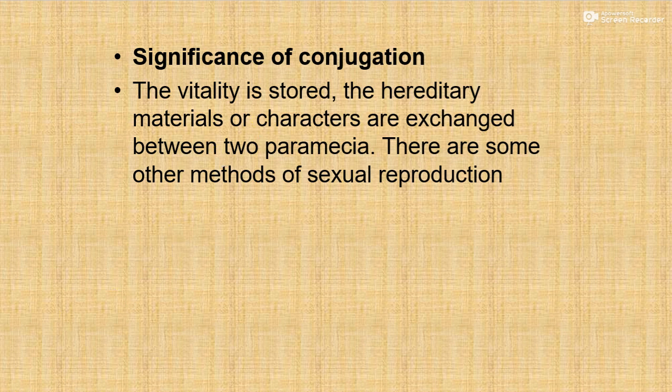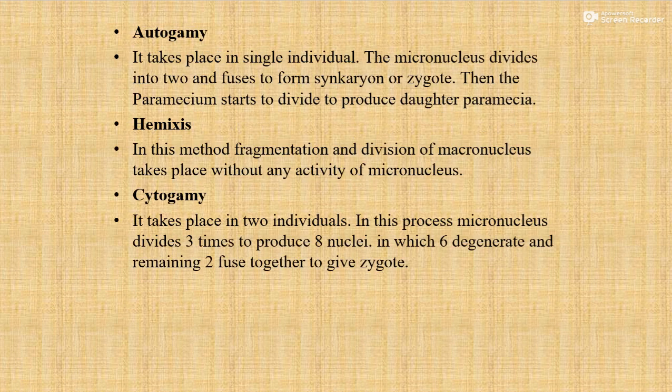Another type of reproduction is autogamy. What is autogamy? It takes place in a single individual. The micronucleus divides into two and fuses to form a synkarion or zygote. Then the paramecium starts to divide to produce daughter paramecia.